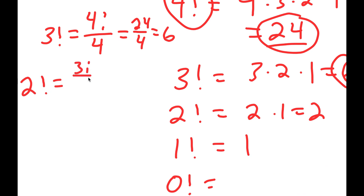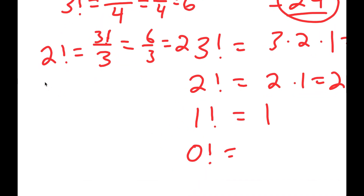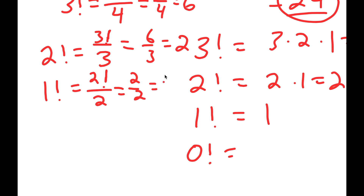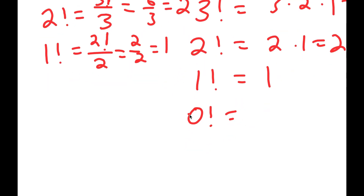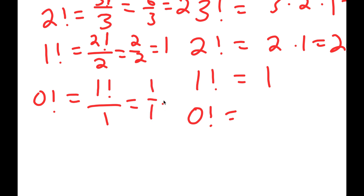Notice how 3 factorial is equal to 6. Going one lower, 2 factorial equals 3 factorial over 3, which is 6 over 3, which equals 2. Then 1 factorial equals 2 factorial over 2, which is 2 over 2, which equals 1. And now we reach 0 factorial, which equals 1 factorial over 1, which is 1 over 1, which is equal to 1.